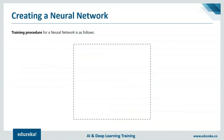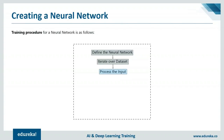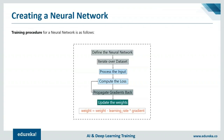The training procedure for the neural network: first define the neural network, then iterate over the dataset, process the input, compute the loss — which tells us how far the expected output deviates from the actual output — and propagate gradients back at every stage to reduce losses. The last step is to update the weights using SGD (Stochastic Gradient Descent). The formula is: weight = weight − learning_rate × gradient.